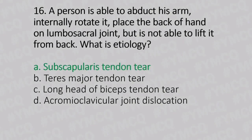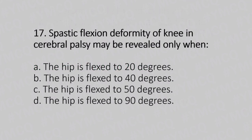Now let's move to question number 17. Spastic flexion deformity of the knee in cerebral palsy may be revealed only when the hip flexes to. Option A: 20 degrees. Option B: 40 degrees. Option C: 50 degrees. Option D: 90 degrees. And the answer is Option D, 90 degrees.